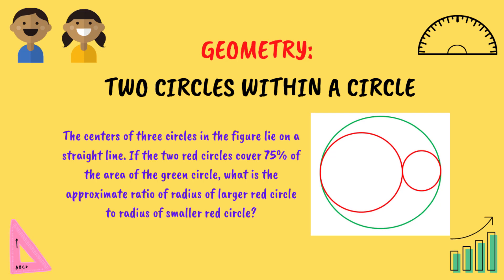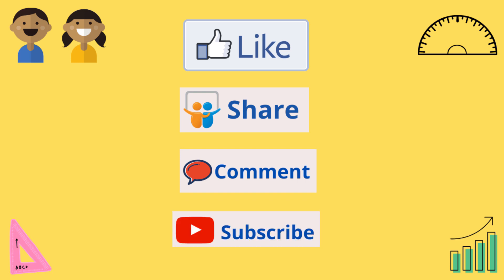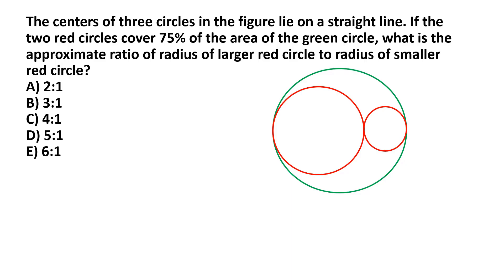Welcome to another new video of interesting math problems on our channel, Math Solutions For You. Please like, share, comment, and don't forget to subscribe to our channel. The centers of three circles in the figure lie on a straight line. If the two red circles cover 75 percent of the area of the green circle, what is the approximate ratio of the radius of the larger red circle to the radius of the smaller red circle?